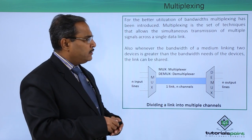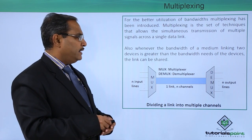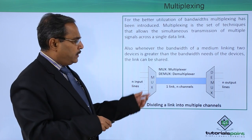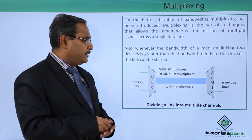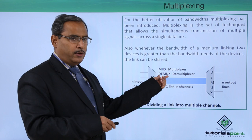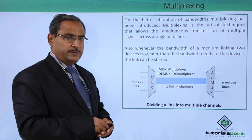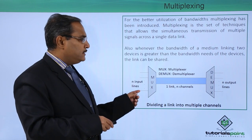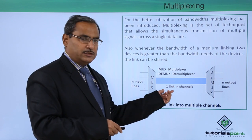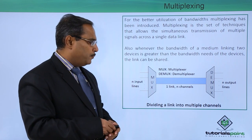Whenever the bandwidth of a medium linking two devices is greater than the bandwidth needs of the devices, the link can also be shared. Just consider this diagram — here we are having only one link, with a multiplexer and demultiplexer, in short called MUX and DEMUX. The multiplexer is at the sending end and DEMUX at the receiving end. Here we are having N number of input lines, and this one link will be utilized for the transmission of N number of channels, with N number of output lines at the DEMUX.